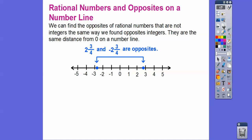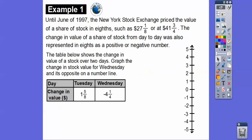Rational numbers and opposites on a number line. We can find the opposites of rational numbers that are not integers the same way we found opposites of integers — they're just the same distance from 0 on a number line. So here's negative 2 and 3 fourths, and here's positive 2 and 3 fourths. They're both 2 and 3 fourths away from 0, so they are opposites — one has a negative, one has a positive.